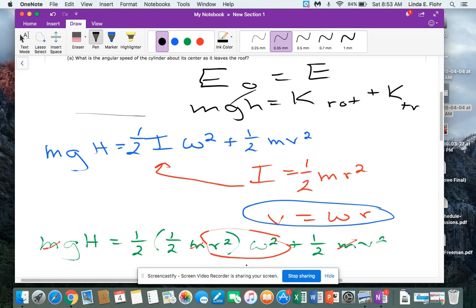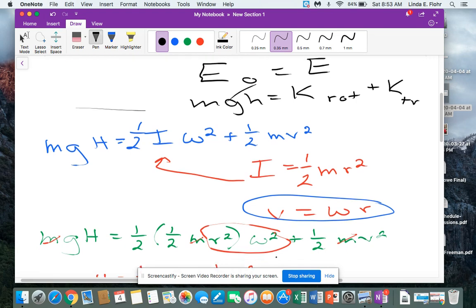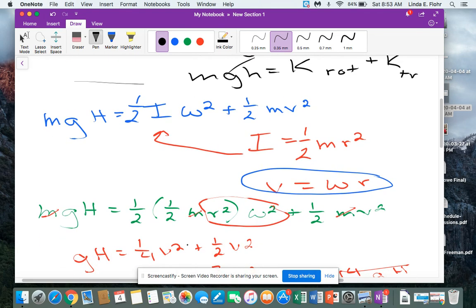Now in this red circle you'll notice that we get the term r squared times omega squared, and so I recognize that that's the same thing as v squared.